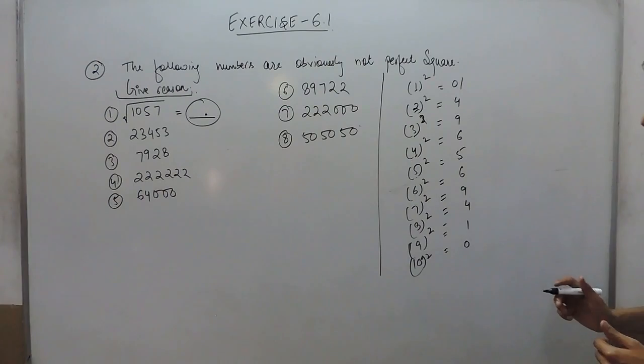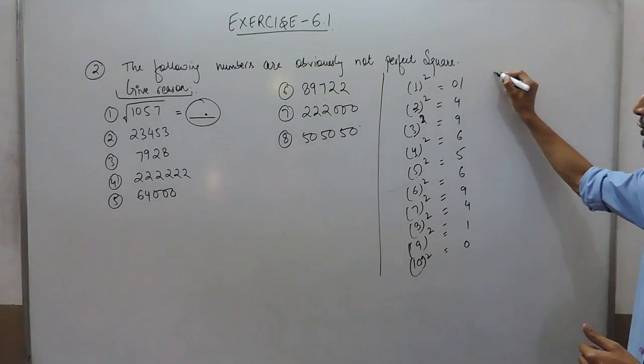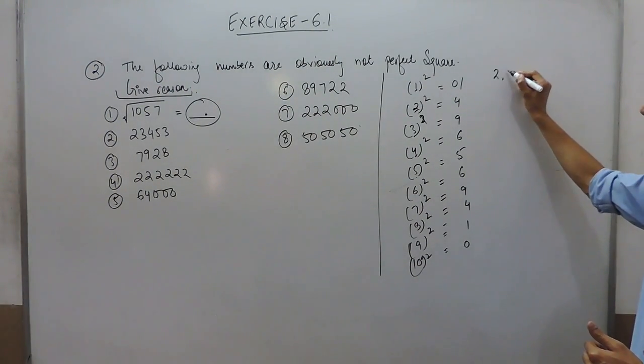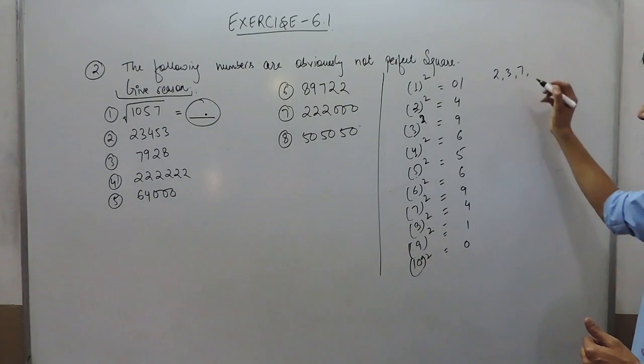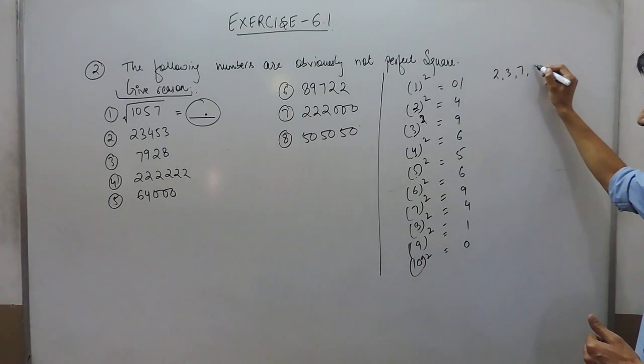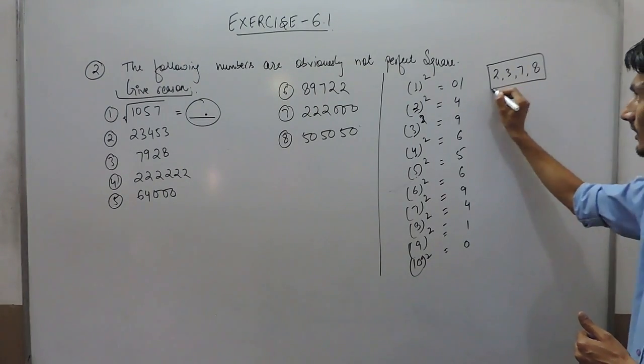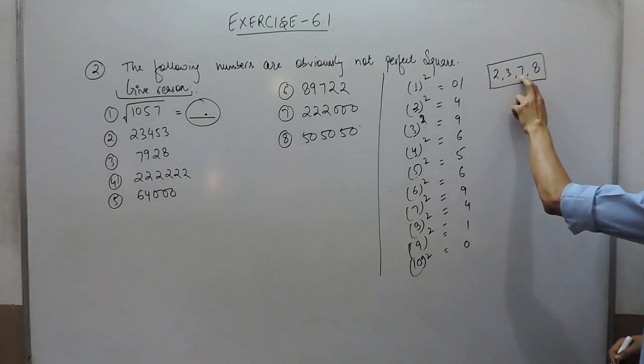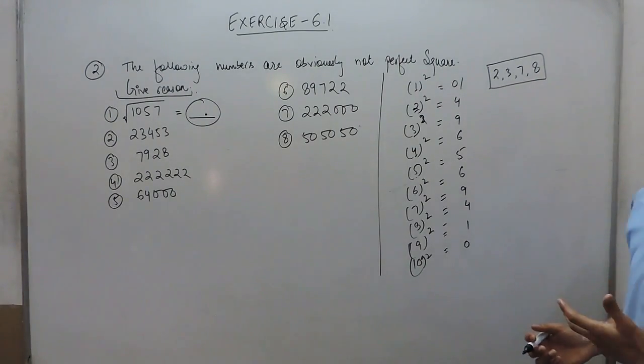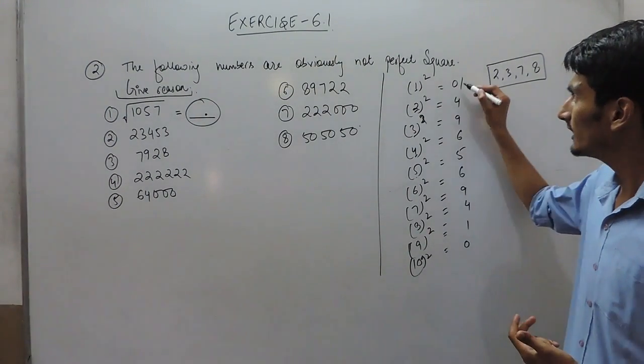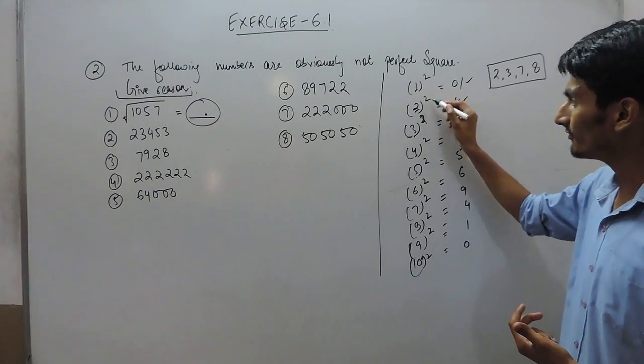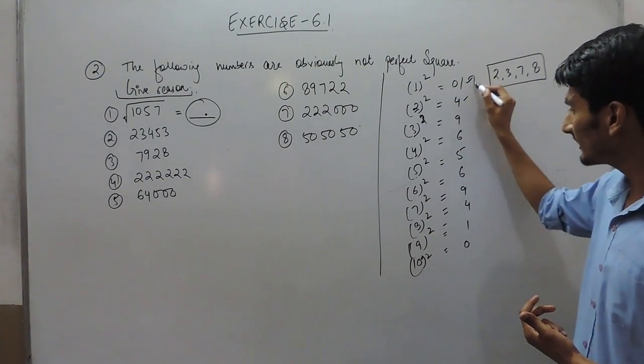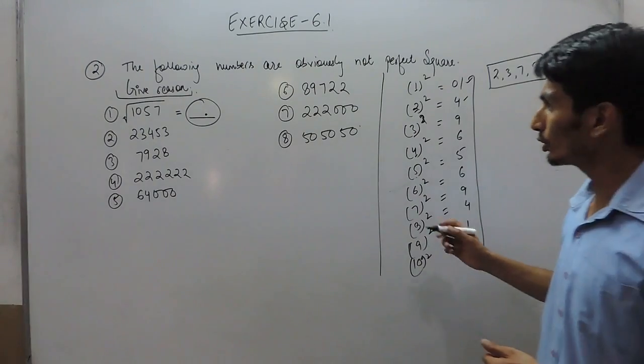So one thing is very clear: 2, 3, 7, and 8—any number which has these unit digits cannot be a perfect square number, because any number squared will give only those specific unit digits.